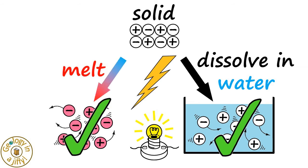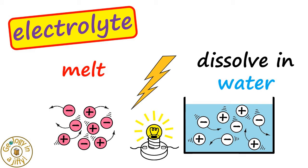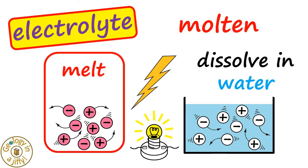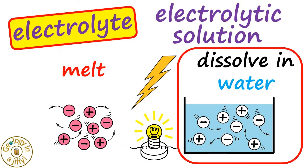These two methods produce electrolytes, substances we can electrolyse. The first being a molten electrolyte, the second an electrolytic solution, where the ions are dissolved in water.